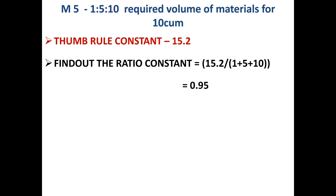Once you correctly solve these two steps, you can easily find out the required volume of cement, fine aggregate, and coarse aggregate. Remember: first, the thumb rule constant 15.2, and based on that, find the ratio constant 0.95. Then use that to find the volumes of each material.